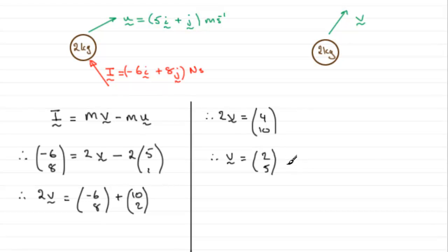Now, we know kinetic energy is ½mv², so we need the magnitude of this velocity. The magnitude of the velocity, by Pythagoras' theorem, will be the square root of 2² + 5². So, 4 + 25, that's 29, √29 meters per second.